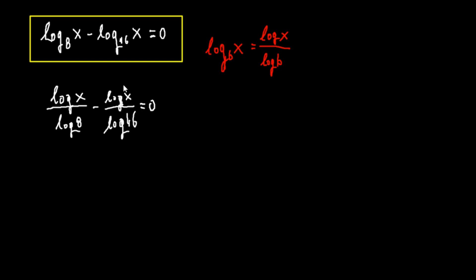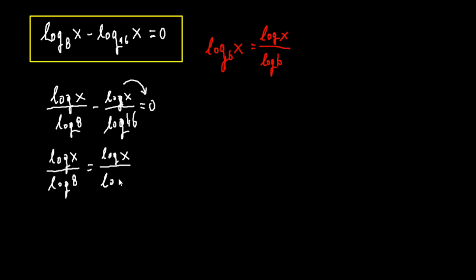We move this fraction to the other side, so we have log x over log 8 equals log x over log 16. We can then work to simplify these denominators, so we have the fraction log x over log 8.